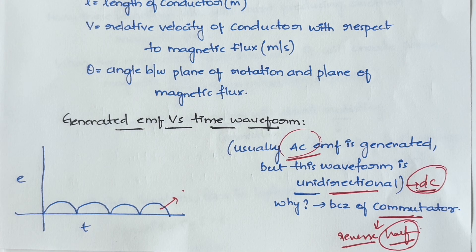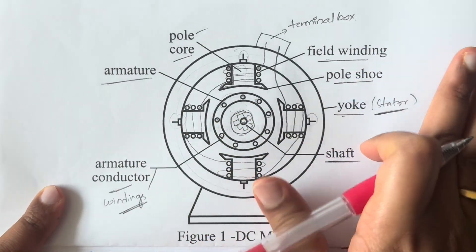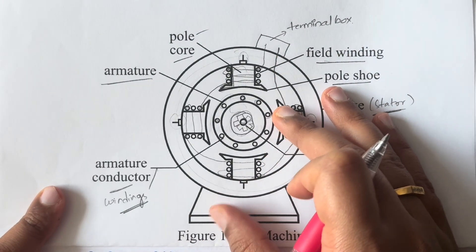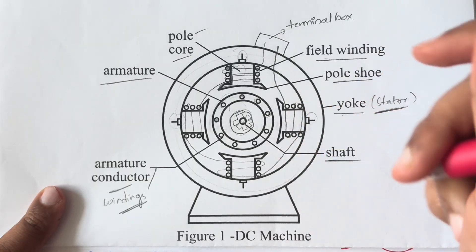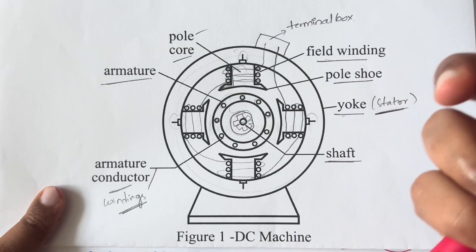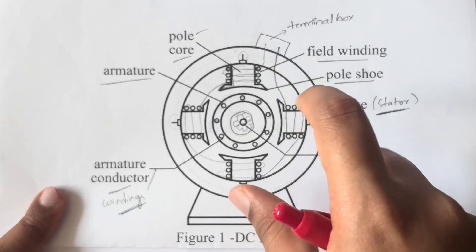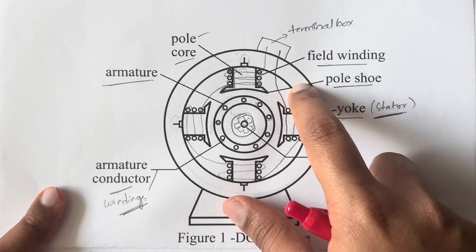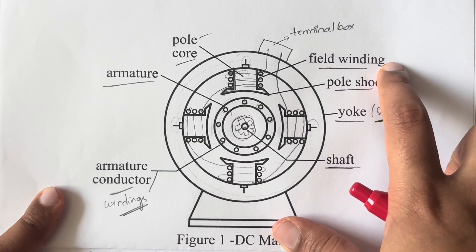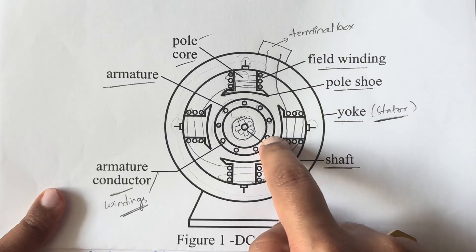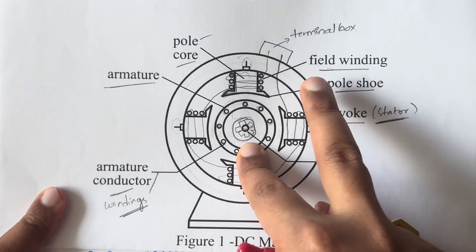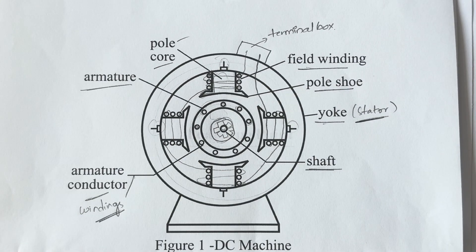To summarize: initially nothing is rotating. First, electricity is sent inside via the terminal box — or in self-excited machines the DC machine uses residual electricity from before — producing a magnetic field. You have current and you have magnetic field, but EMF still won't come automatically because there is no relative motion between the magnetic field and the conductor.